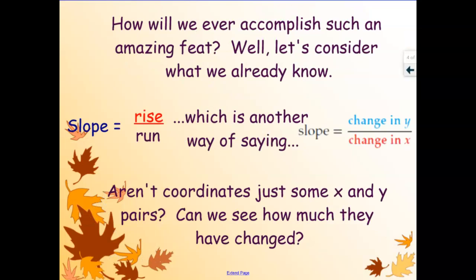All right. How are we ever going to figure out slope just looking at two points without a line or anything? Well, let's look at what we already know. So we know that slope is rise over run, which is another way of saying change in y over change in x, like from the table, but aren't coordinates just some x and y pairs? Why? Yes, they are. If we want to see how much they change, we just need to subtract them.